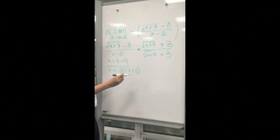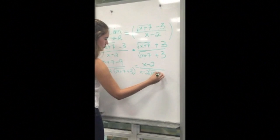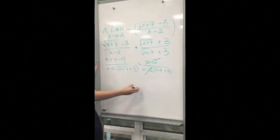After subtracting everything on top, you will have x minus 2 over x minus 2 times square root of x plus 7 plus 3. Here you cancel x minus 2 because you have it on both the top and bottom. So what you have left is 1 over square root of x plus 7 plus 3.